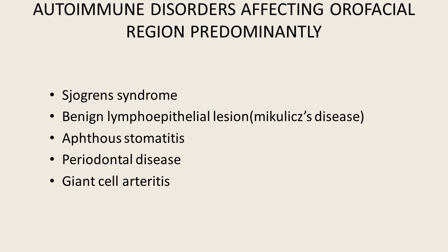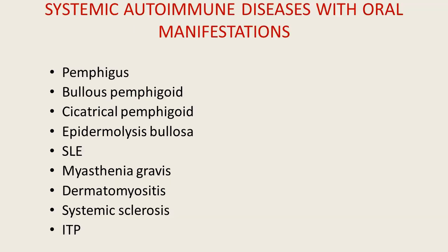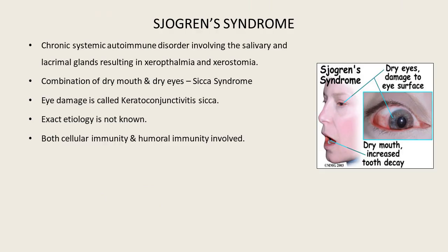Coming to the classification of systemic autoimmune diseases with oral manifestation. The first one is Sjögren's syndrome: a chronic systemic autoimmune disorder involving the salivary and lacrimal glands, resulting in xerophthalmia and xerostomia. The combination of dry mouth and dry eyes is called Sicca syndrome. Eye damage is called keratoconjunctivitis sicca. The exact etiology is not known, and both cellular and humoral immunity are involved.